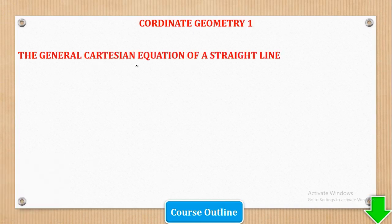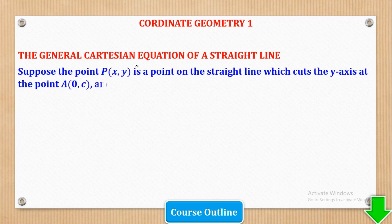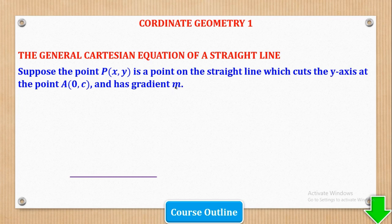We start with the general Cartesian equation of a straight line. This is similar to the one you did in O-Level. Suppose the point P, which is (x, y), is a point on the straight line which cuts the y-axis at point (0, c) and has a gradient m. Here we have the axes, then we have the straight line which passes through the point A, which is (0, c), and point P, which is (x, y).